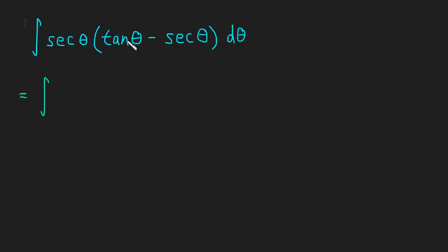First thing I'm going to do is multiply in this secant theta. So this is going to be secant theta tangent theta minus secant squared theta, of course, d theta.